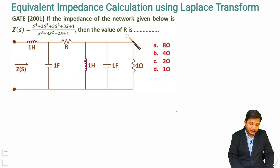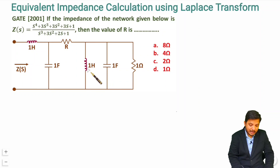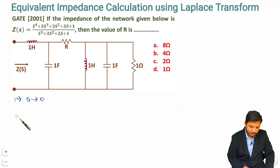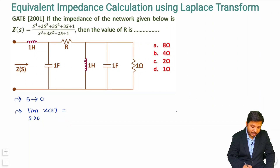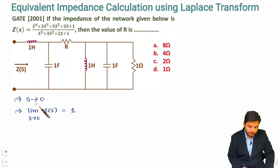What you need to do is understand the meaning of the capacitor and inductor in terms of initial and final conditions. Consider what happens when s is going towards 0. The limit as s tends to 0 of Z(s): if you substitute s = 0 into the expression, you get (0+1)/(0+1) = 1. So Z(s) equals 1. Now, what is the meaning of s tending to 0?